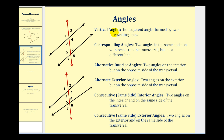First, we have vertical angles. Vertical angles are non-adjacent angles formed by two intersecting lines. So this one's review. Remember, angle one and angle four are vertical angles, as well as number two and number three, number five and number eight, and number six and number seven.